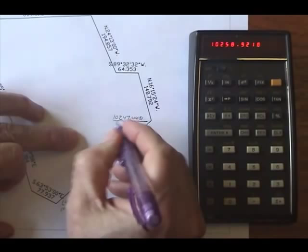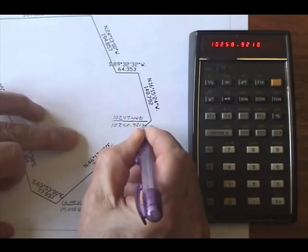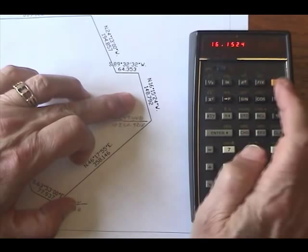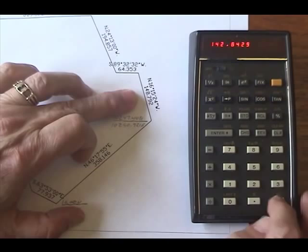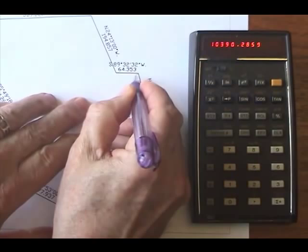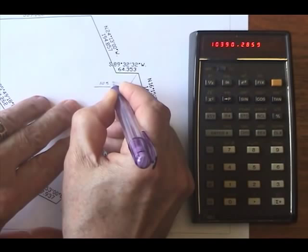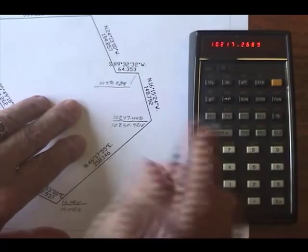16 degrees 15 minutes 24 seconds. Convert to decimal. It's northwest so it's going to be minus 148.792. Polar to rectangular. Summation. Recall 7: 10,390.2859. Recall 8: 10,217.2689. If I can see it okay.